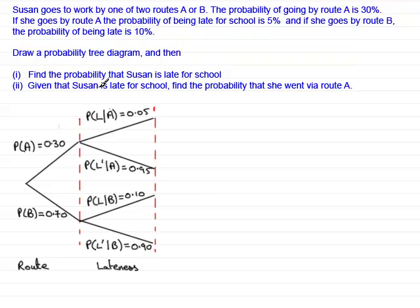Now the first question asks us to find the probability that Susan is late for school. So in other words, for part one, we've got to find the probability that she is late for school. That's just simply P(L). And remember that if we had written P(L) here as equaling 0.05 or P(L) down here as being 0.10, this would have caused a lot of confusion. So we'll just remove that again then.